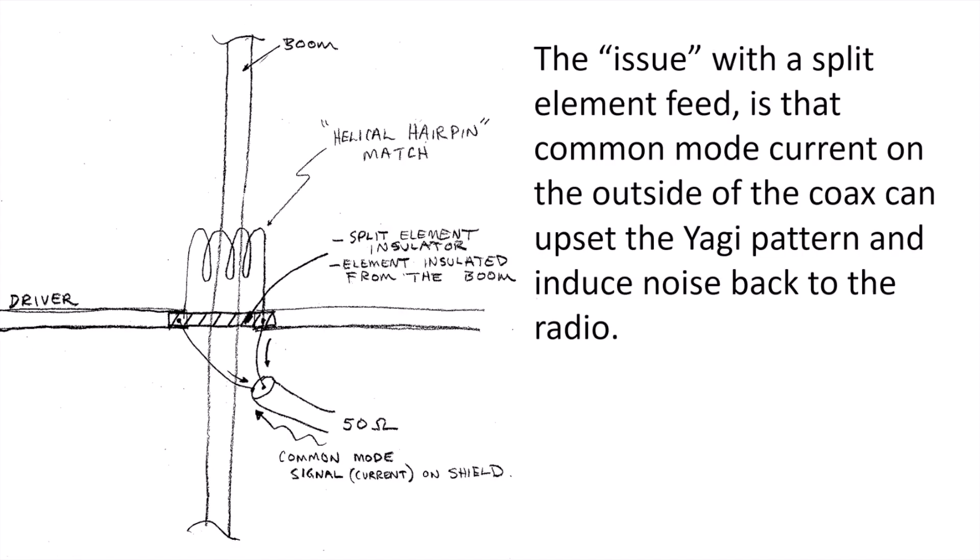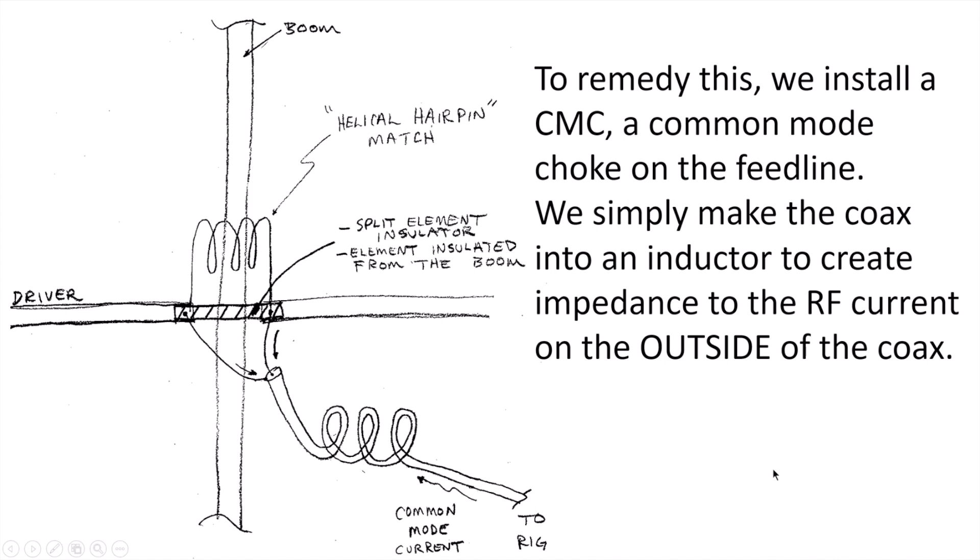The issue with a split element feed is that common mode current on the outside of the coax can upset the Yagi pattern and induce noise back to the radio. That common mode signal can migrate, find its way onto the Yagi and ultimately back to the radio. The remedy for this is we install a CMC, a common mode choke at the feed line. We simply make the coax into an inductor to create impedance to that RF that's on the outside of the coax.